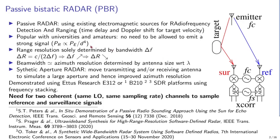Range resolution — the accuracy with which distance can be estimated — is solely dependent on the inverse of bandwidth. Range resolution equals the speed of light divided by twice the bandwidth, twice because it is a two-way trip. The higher the bandwidth, the better the resolution.